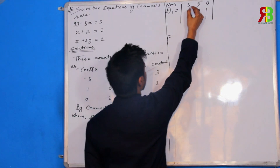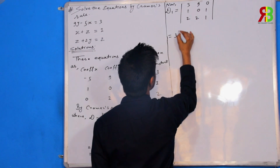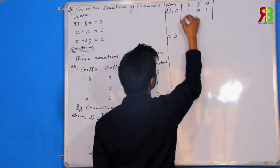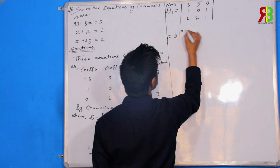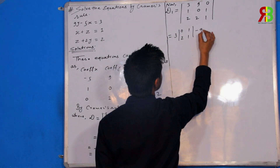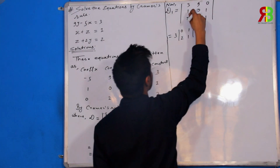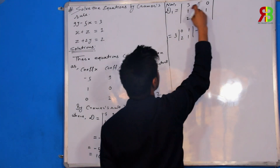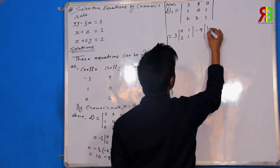Expand. 3. 0, 1, 2, 1 minus 9. Column 1, 1, 2, 1.